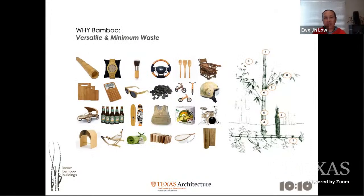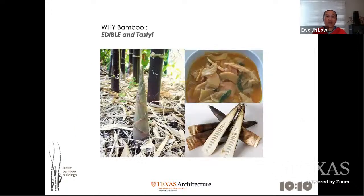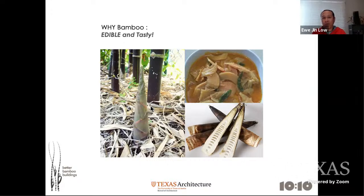Bamboo has even more uses than the coconut tree. Of course, it is also tasty — bamboo shoots, if you've tried them in Malaysia or Thailand with green curry with chicken, they are really tasty. There are many industries now growing bamboo not just as a structural material but also for shoots for food security — harvested fresh, bottled, or sold in Vietnam and Thailand as crunchy, sweet fresh bamboo shoots in salads.